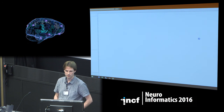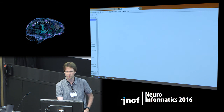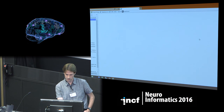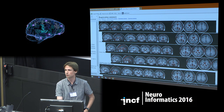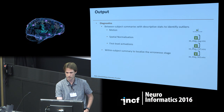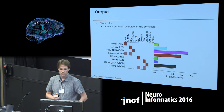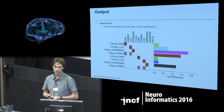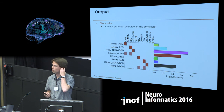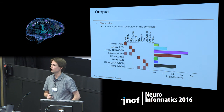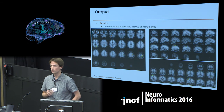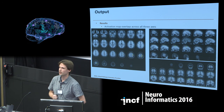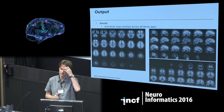There is also a summary of all the registrations, so you can easily browse through it and pick out a subject that was not registered properly. It also provides a graphical representation of all the first-level contrasts with a log efficiency estimate, and it generates activation maps overlaid across all three slices and axes.